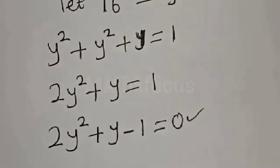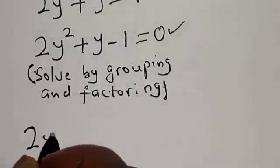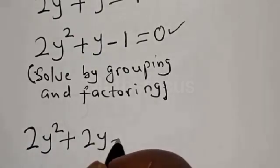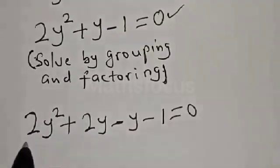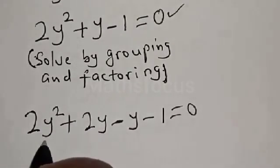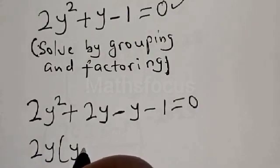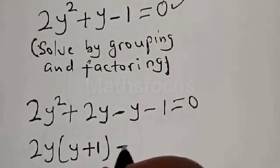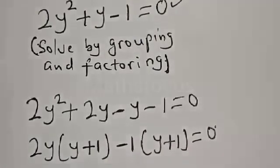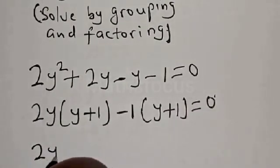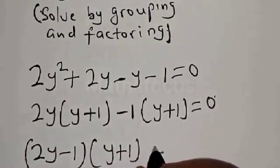This is a quadratic equation. Let's solve this by grouping and factoring. We have 2y squared plus 2y minus y minus 1 is equal to 0. From the first two terms, 2y is common: 2y(y + 1). Then minus 1(y + 1) is equal to 0. Therefore we have (2y minus 1)(y + 1) is equal to 0.